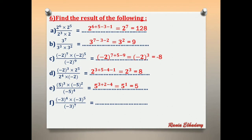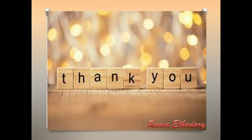Letter F: (negative 3)^4 × (negative 3)^5 over (negative 3)^7. Same base — (negative 3)^(4+5−7) = (negative 3)^2. Power 2 is even — cancel the negative. 3^2 = 9.